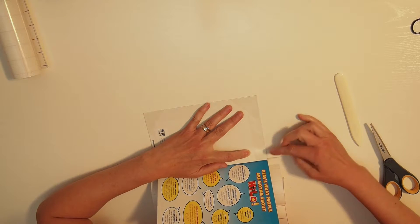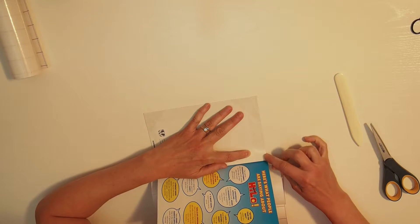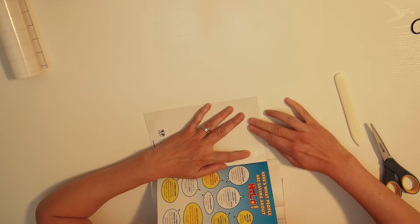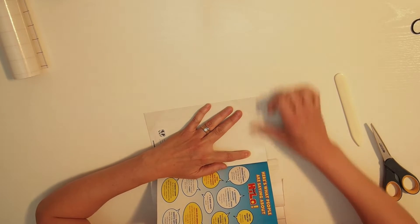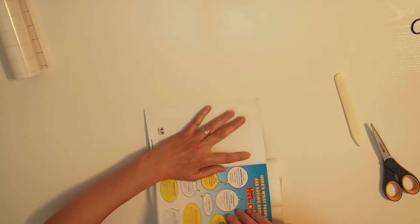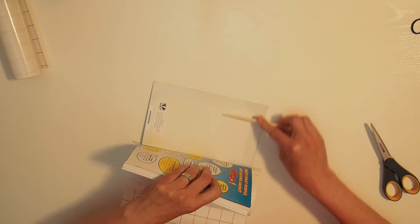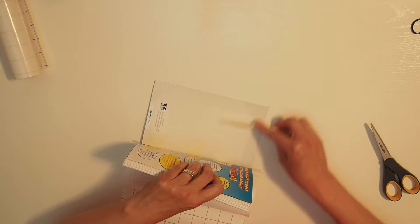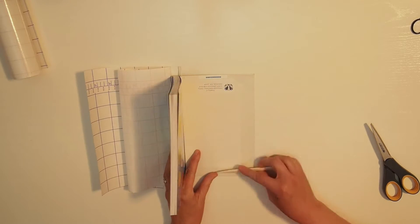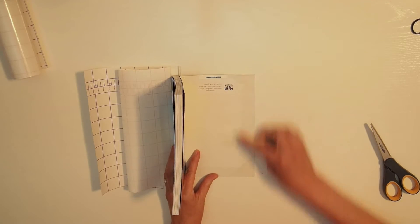And again, you want to make sure that you've got this all the way up against the edge of the book. Push, push, push. And then this is the point at which I use my bone folder, because I want to make sure that these are really well adhered. Just rub with your bone folder all along here.